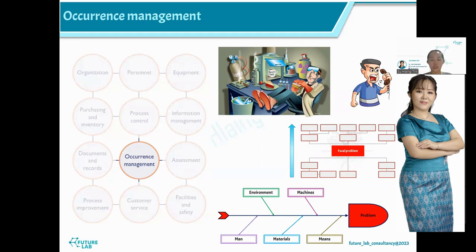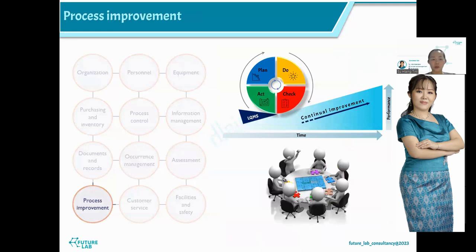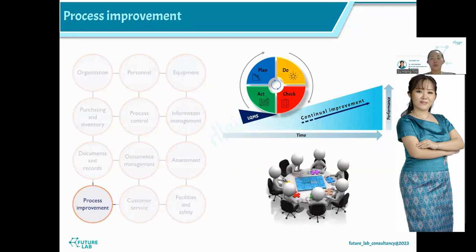This is the NC — the non-conformity — and the focal problems, which are the root cause and effect. The internal assessment is used in QA. We also have process improvement, which is continuing improvement in the quality system — the process improvement is 12 QACR.